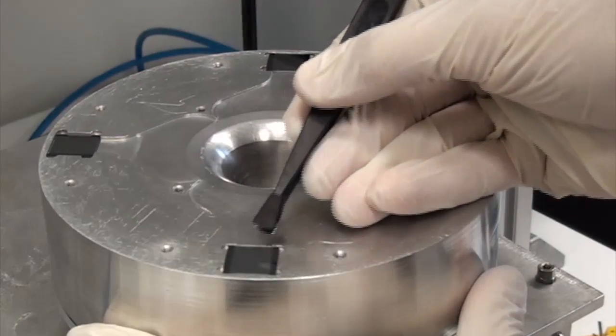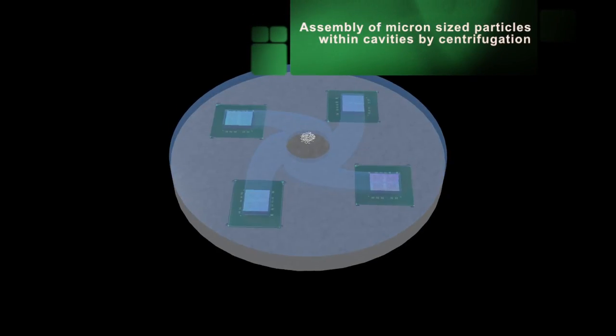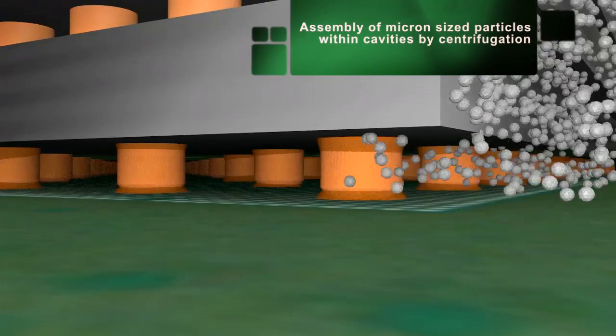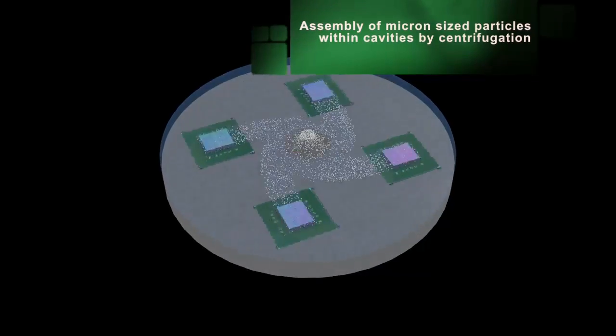Next, the chip stacks are positioned on a centrifuge, which spins and forces the micron-sized particles into the gaps between the chips and laminate to form point-to-point contacts for the heat to dissipate.